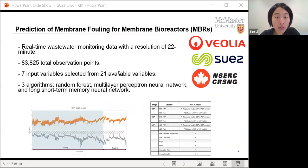So we got a lot of data from our industrial partner. This is monitoring data with a temporal resolution of 22 minutes. And there are lots and lots of observation points. There are many different input variables, but we selected only seven from 21 available variables. This is mainly to reduce the computational requirement.